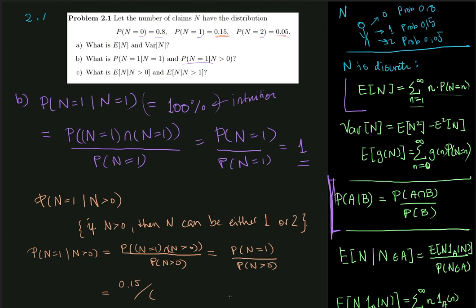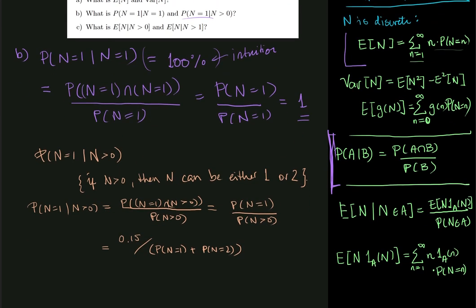So the probability that N is equal to 1 is given by 0.15, as we can see above. And the probability that N is greater than 0, well, that happens if either N is equal to 1 or if N is equal to 2. So it's the probability of the two added together. And that is equal to 0.15 divided by 0.15 plus 0.05, which gives 3 quarters.